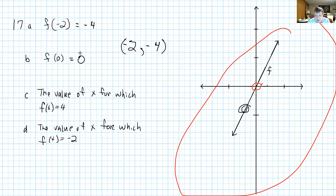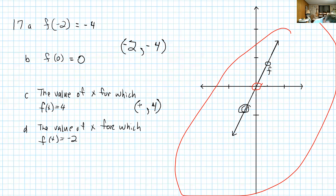Now take a look at part c. It says the value of x for which f of x equals 4. Recall that f of x is another name for y, so what they're asking is to complete this ordered pair. I need to look at the graph and find where there is a y value equal to 4 — right here. When y is 4, the corresponding x value is 2. So x equals 2.